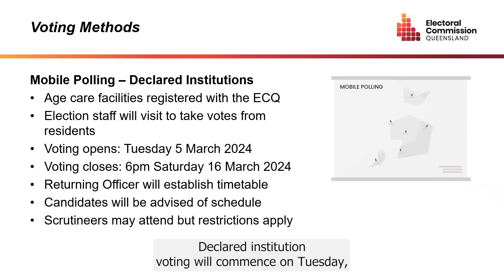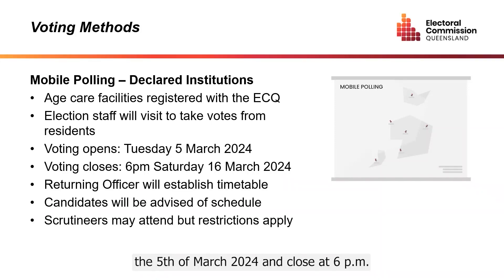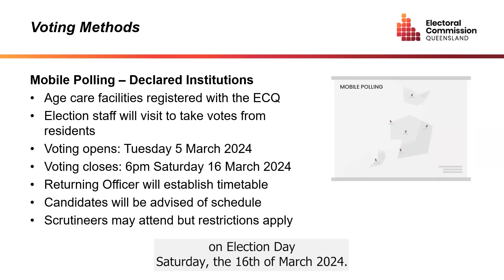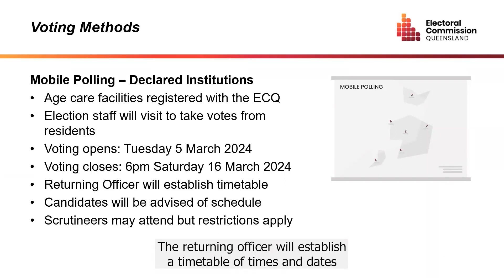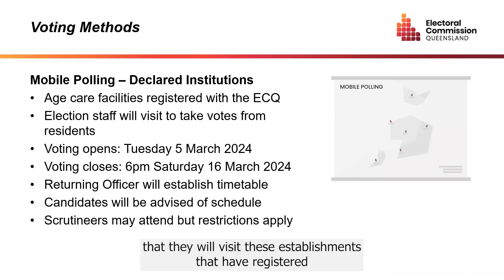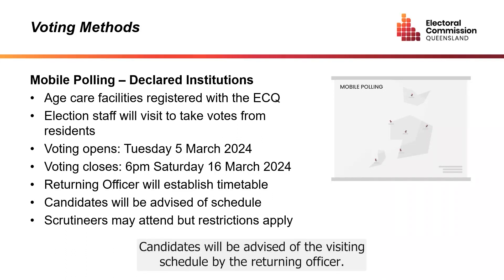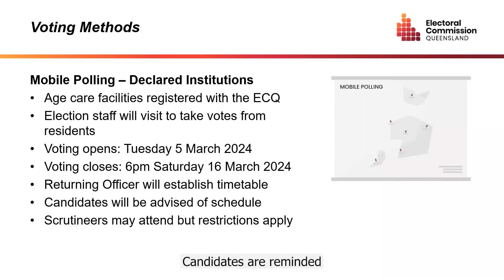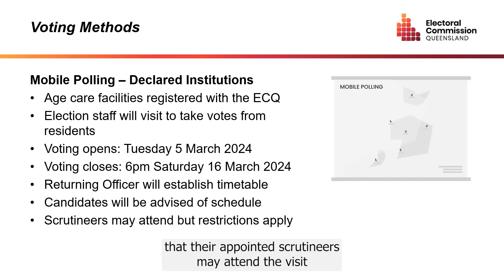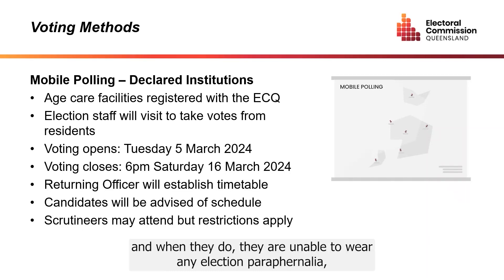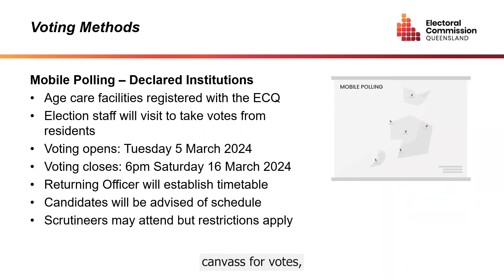The returning officer will establish a schedule of times and dates that they will visit establishments registered with the Electoral Commission of Queensland. Candidates will be advised of the visiting schedule by the returning officer. Candidates are reminded that their appointed scrutineers may attend the visit, and when they do, they are unable to wear any election paraphernalia, hand out how-to-vote cards, canvas for votes, touch ballot papers, or carry ballot boxes.